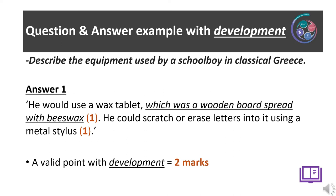Here is a describe question and part of an answer example showing development of a valid point. Question: Describe the equipment used by a schoolboy in classical Greece. Answer 1: He would use a wax tablet, which was a wooden board spread with beeswax — you have explained what the wax tablet was and developed your point, doing more than simply listing it. Answer 2: He could scratch or erase letters into it using a metal stylus — you have stated the tool and explained what he would use it for. This is a valid point with development, gaining two marks.